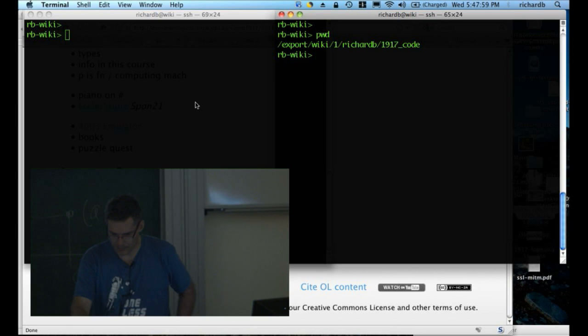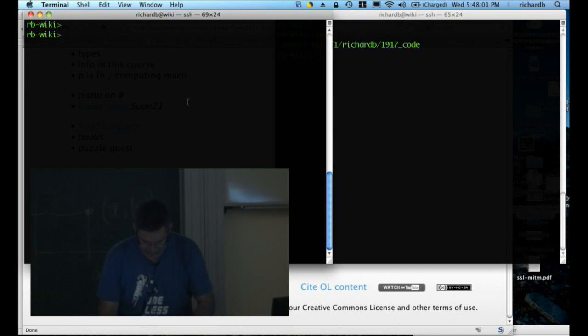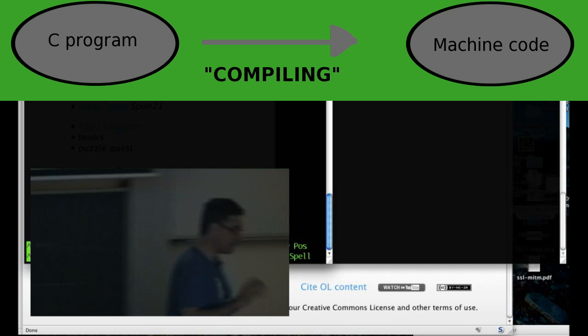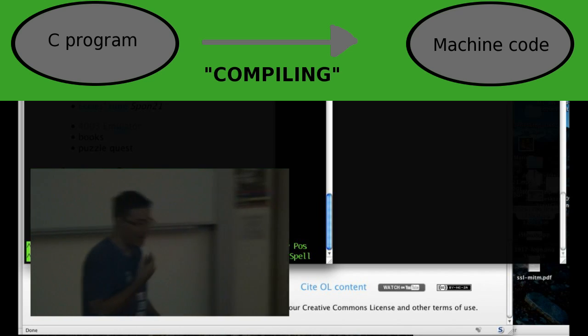All right, I'm going to write a C program using a very, very simple editor called Picker. And I'll call my program first. First.C. It ends with a .C because that's how I tell myself that I've put a C program in. I'm going to write the world's smallest and simplest C program. And then I'm going to show you how we turn it into machine code.